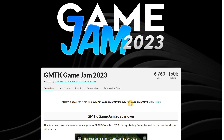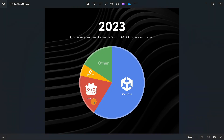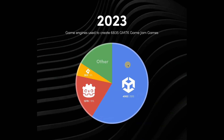This data was collected in July 2023, before the Unity runtime fee debacle — remember the Unity runtime fee issue happened around August-September. So these are the results before the Unity controversy that caused many people to stop using it. Even before that, Godot was already quite popular: Unity led with over 60% of submitted games, while Godot had over 20%.